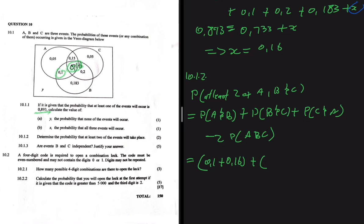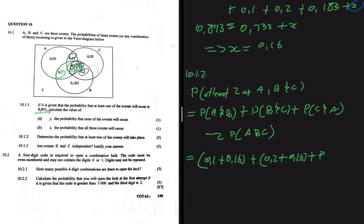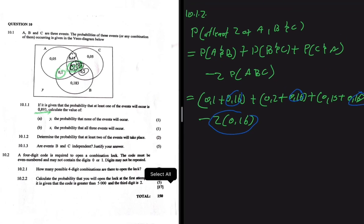The probability of B and C is 0.2 plus 0.16, and the probability of C and A is 0.15 plus 0.16. Then we subtract 2 times 0.16. We counted 0.16 three times and subtract it twice, so we end up counting it only once. Putting this in the calculator gives 0.61, so the probability that at least two events occur is 0.61.